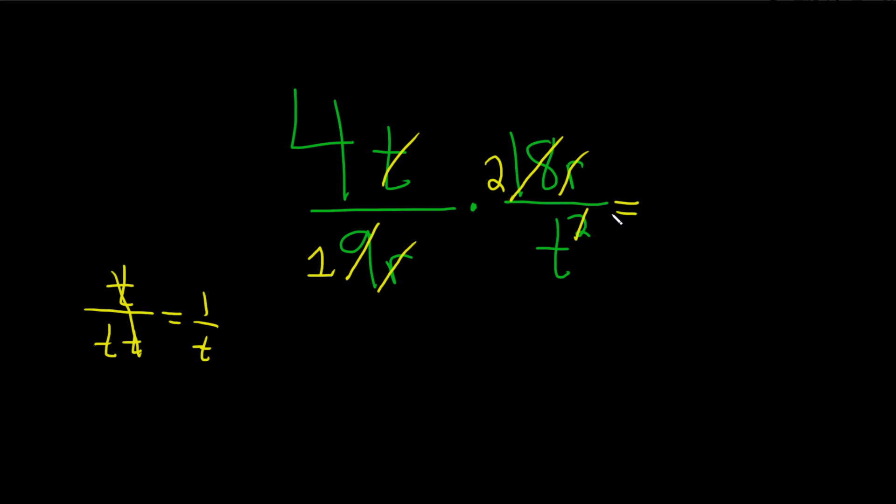And now we're ready to multiply straight across. So what's left up here, just 4 times 2, so that's 8. Over, and on the bottom, it's just 1 times T. Wow, really cleaned up, so just T. So the final answer would be 8 over T.